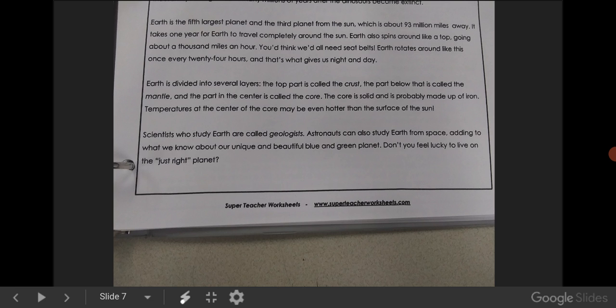Earth is divided into several layers. The top part is called the crust. The part below that is called the mantle, and the part in the center is called the core. The core is solid, probably made of iron. Temperatures at the center of the core may be even hotter than the surface of the sun.